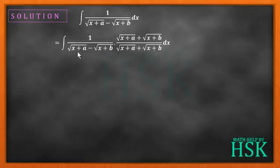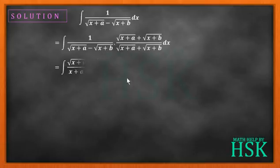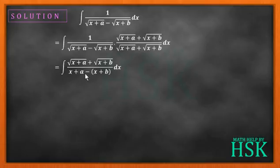You should remember that if we have an irrational term like this, by just changing the minus sign to a plus sign we get the rationalizing factor. Now simplifying: the numerator becomes square root of (x plus a) plus square root of (x plus b), and the denominator becomes (x plus a) minus (x plus b).